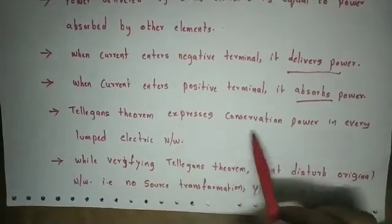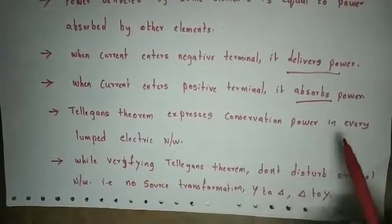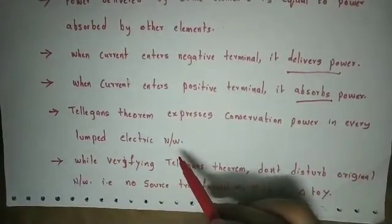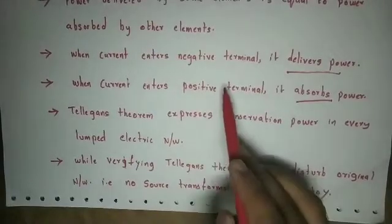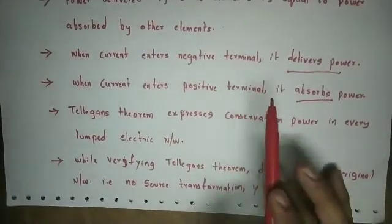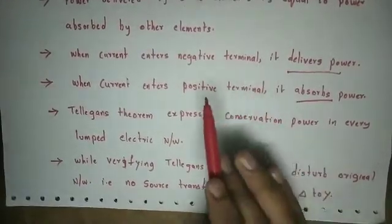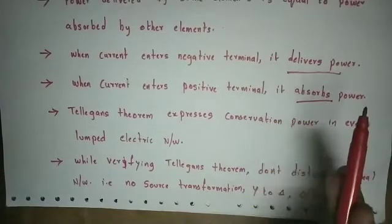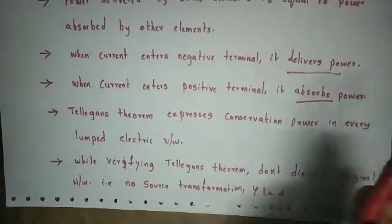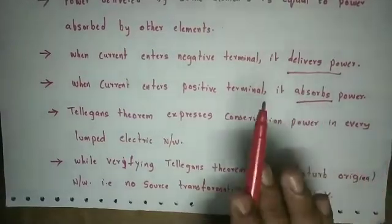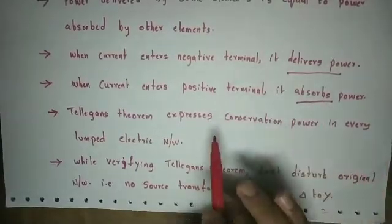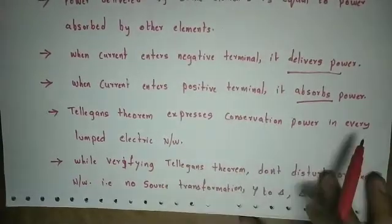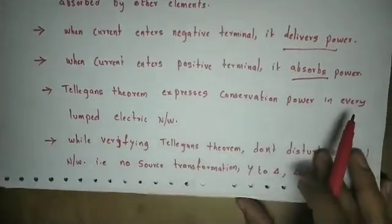Tellegen's theorem expresses conservation of power in every lumped electric network. Power is not created anywhere — some elements deliver power to other elements. A lumped network has a finite number of elements.